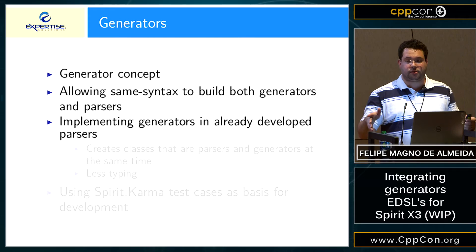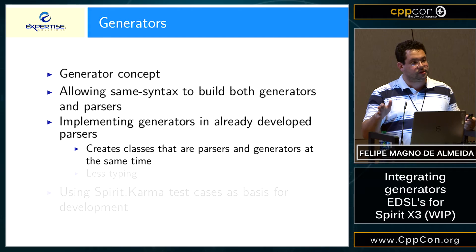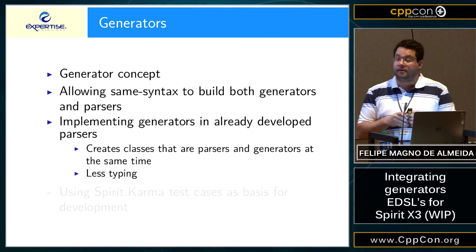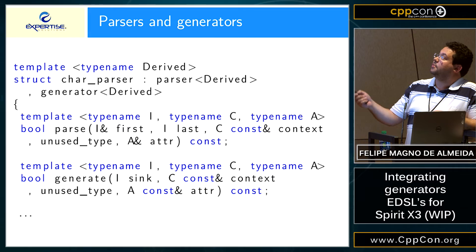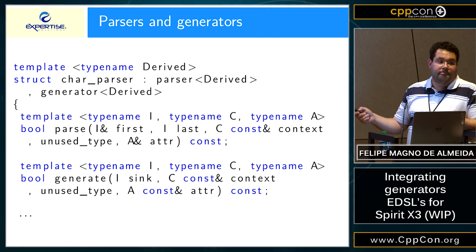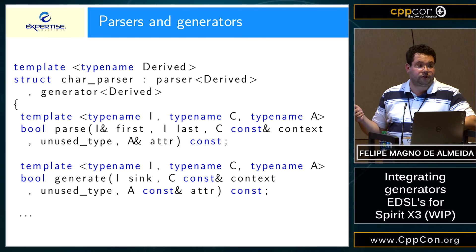We decided to implement generators inside the parsers in Spirit X3. We created classes that model both the generator concept and the parser concept at the same time. It has less typing and is easier to understand. For example, the char parser previously only had a parse function, and now it also has a generate function. This is not a problem because none of those are instantiated unless necessary. This becomes an issue only with rules — which we have not implemented for generators yet — because when you create rules for generators, the user has to decide if that rule will be parser-only, generator-only, or both.